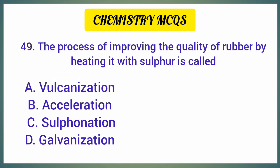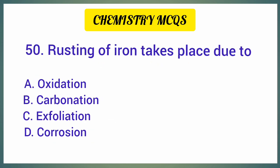The process of improving the quality of rubber by heating it with sulfur is called — correct option is option A. Rusting of iron takes place due to — correct option is option A: Oxidation.